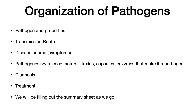So how is this organized? There's going to be talk about the pathogen and its properties, the transmission route, and the disease course or its symptoms. We'll then talk about the pathogen's virulence factors such as toxins, capsules, enzymes, etc. In the case of viruses, we'll talk about the replication cycle and anything unique it does. We will then talk about diagnosis and treatment. That's how it'll be organized.